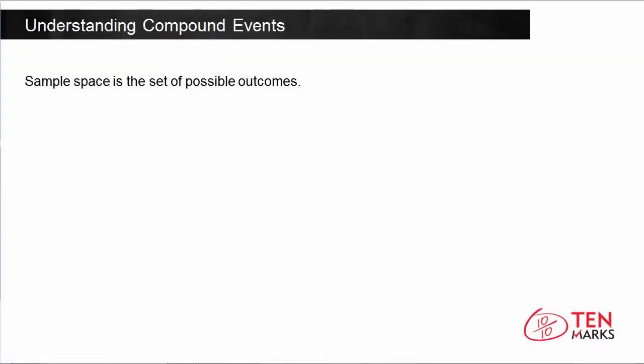In this lesson, you will learn how to find the probability of more than one event occurring. When you are solving for the probability of multiple events occurring, you first need to define your sample space. Sample space is the set of possible outcomes. Let's try a problem now to understand how we can find the probability of multiple events happening.